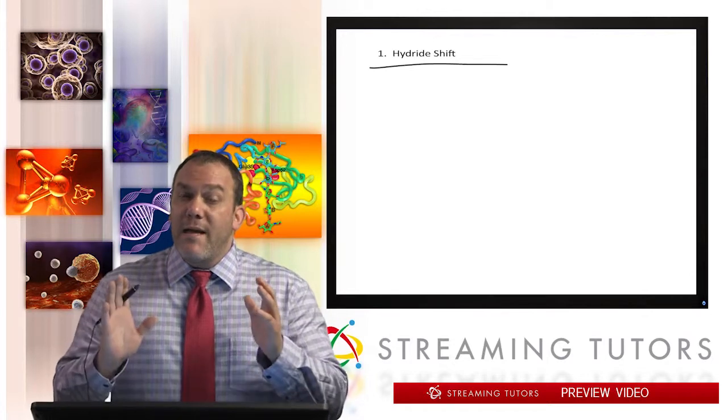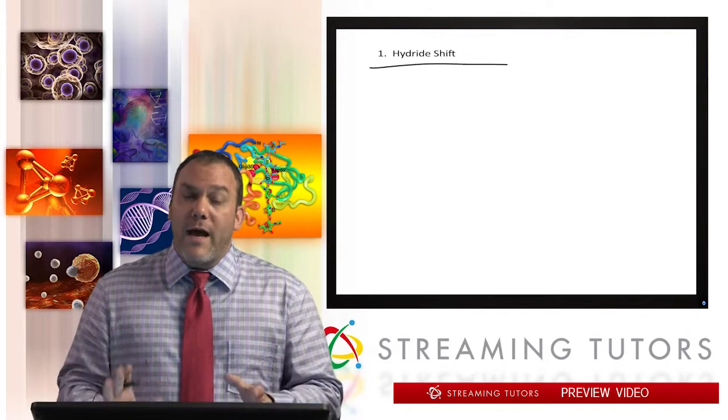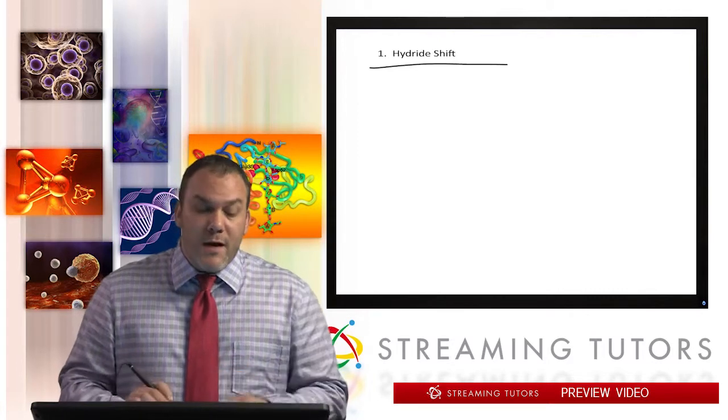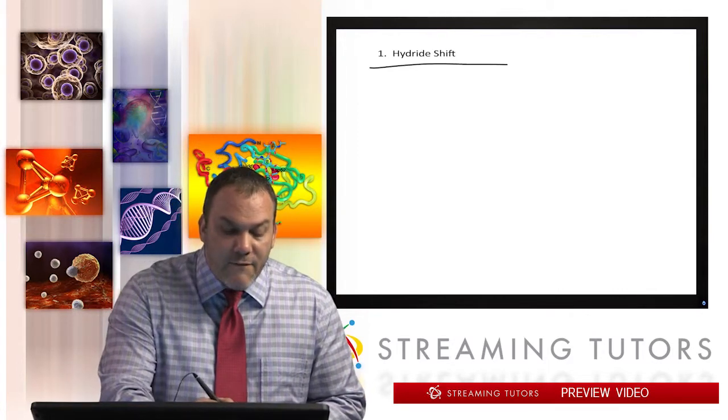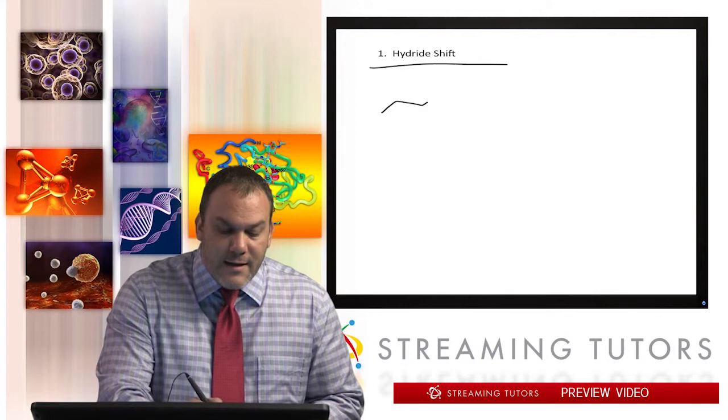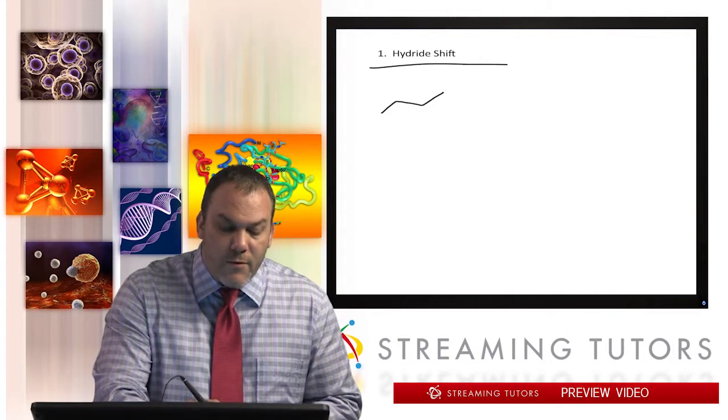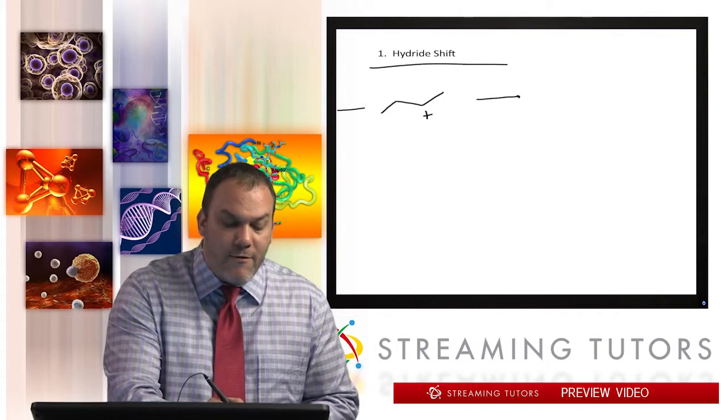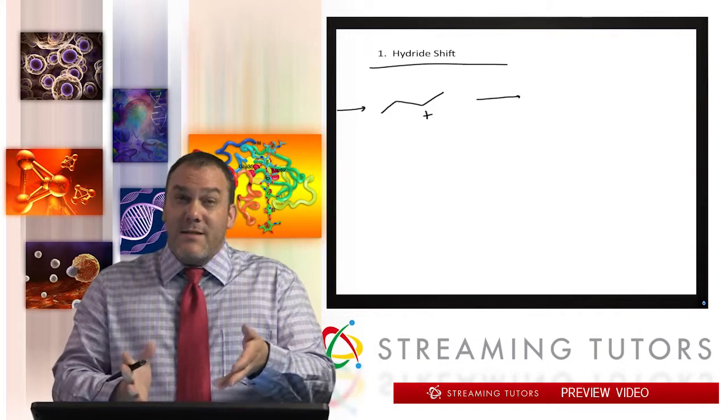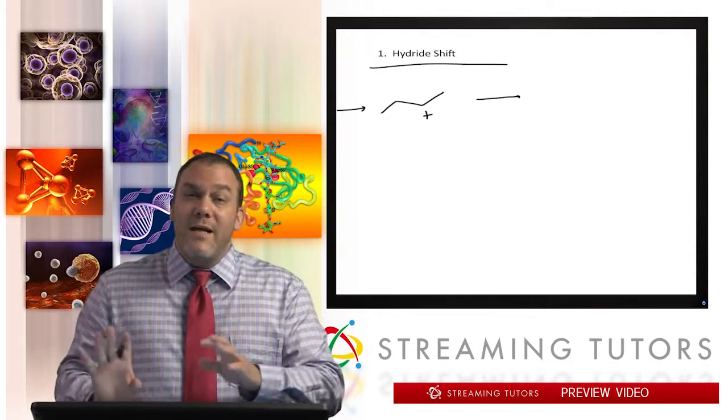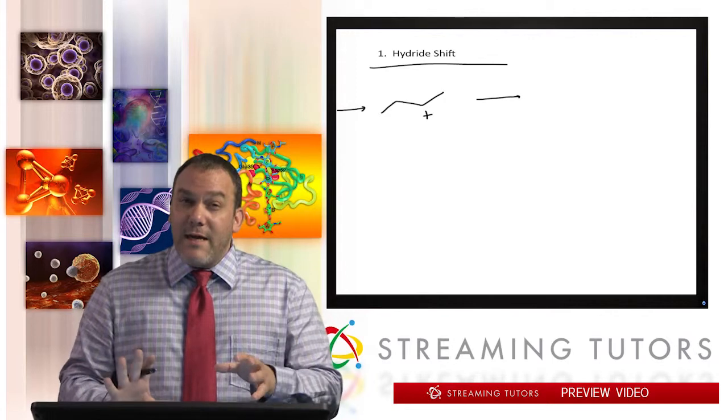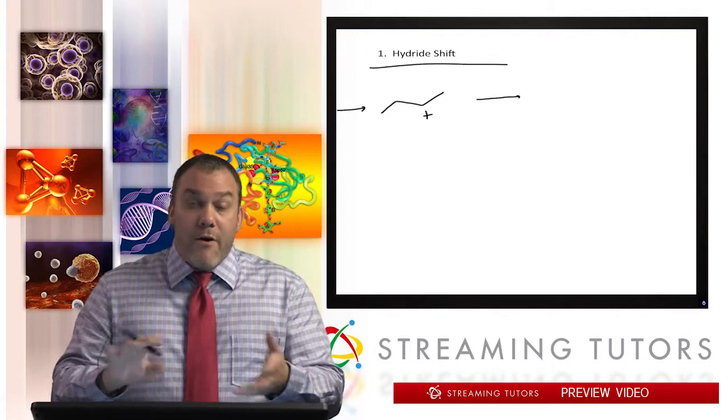That's why this is something that we learn throughout the whole year, because there are many carbocations in many different reactions. But anytime you have a carbocation, you always have the potential for rearrangement. Here's how it works: let's say we have a reaction and somehow we get a carbocation here. It doesn't matter how we got here.